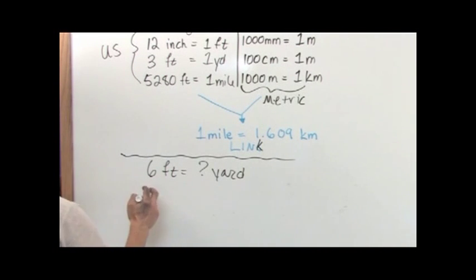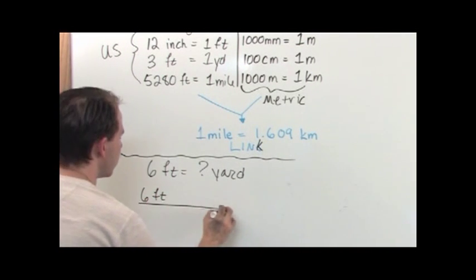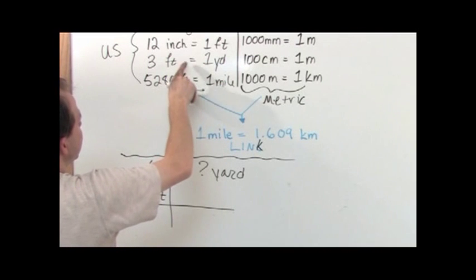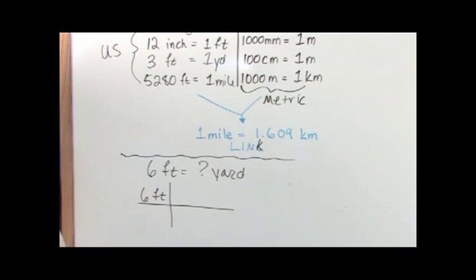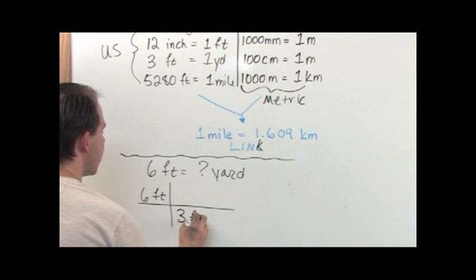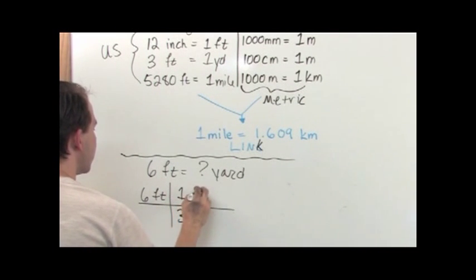So again, you start with what you have, six feet. Draw that horizontal line with a vertical bar here and you try to find a conversion factor between feet and yards. We see that we have one, feet and yards. Three feet is one yard. I need to arrange it to cancel the unit. So I write it as three feet on the bottom and one yard on the top.